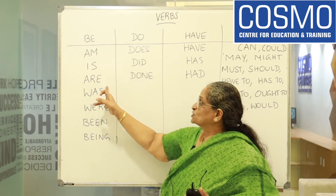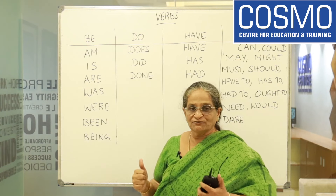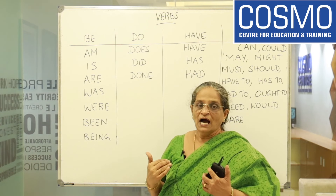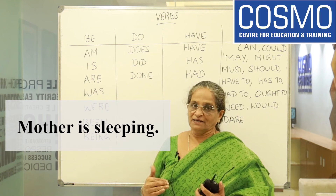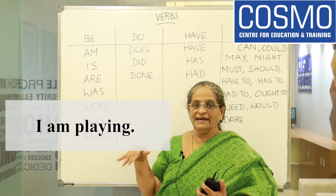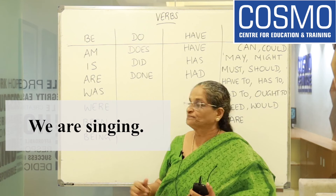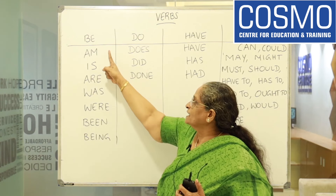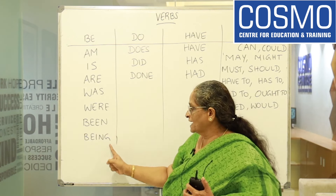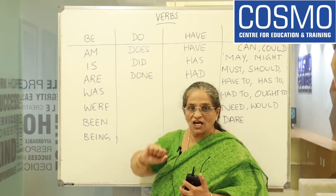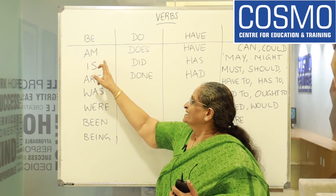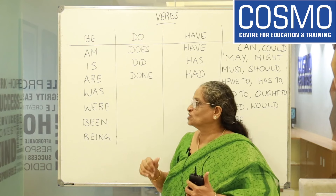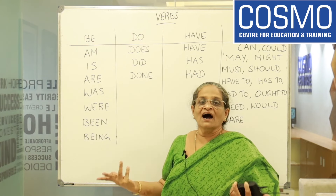Now let's learn the present forms: AM, IS, ARE. What is the meaning? Present tense. 'Be a good child' becomes 'I am a good child.' She is a good child. We are good children. AM is used with I, IS is used with singular third person, and ARE is used with plurals.